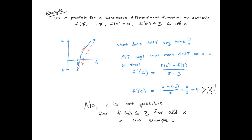But the original problem says f'(x) ≤ 3. So when it asks: is it possible for a continuous differentiable function to satisfy these properties? No, it's not possible. Because if f(3) = −2 and f(5) = 6 and it's continuous and differentiable, you can use the Mean Value Theorem to say there must exist an f'(c) equal to four. Clearly the derivatives cannot all be less than or equal to three, because we just showed one of them is definitely equal to four by the Mean Value Theorem.